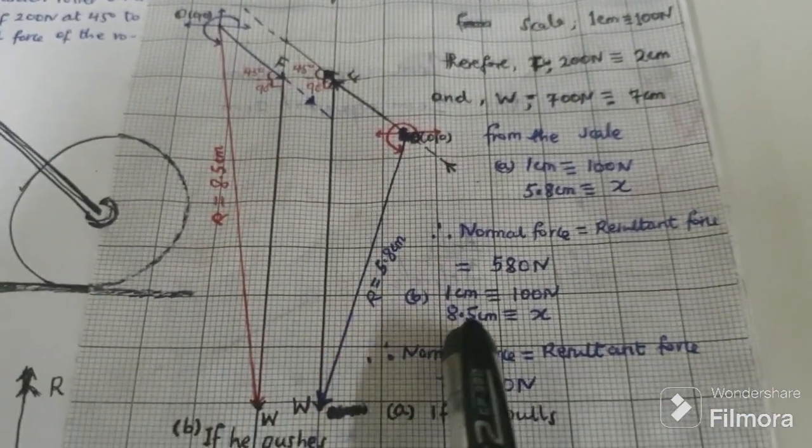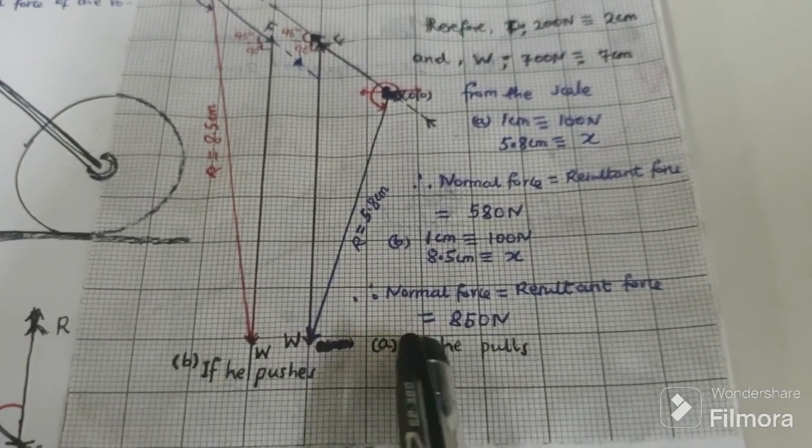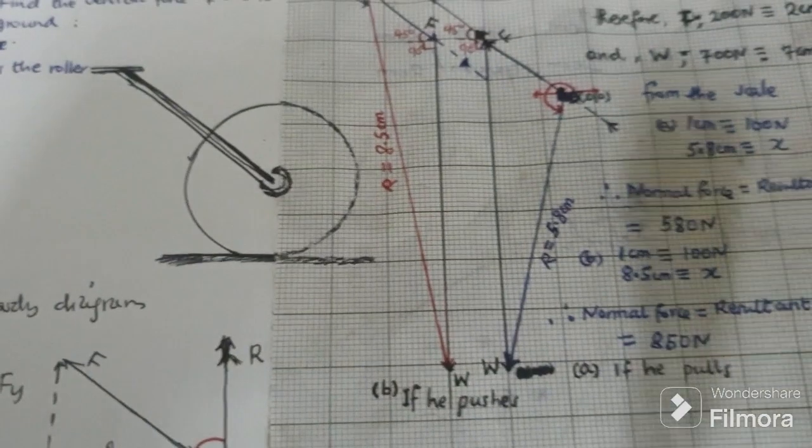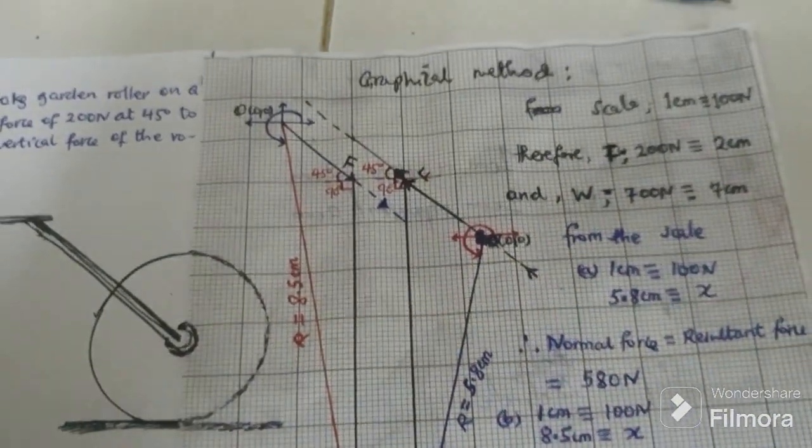Then we come from our scale, then we multiply, and we get 850 newtons, and this is the method of the graphical method.